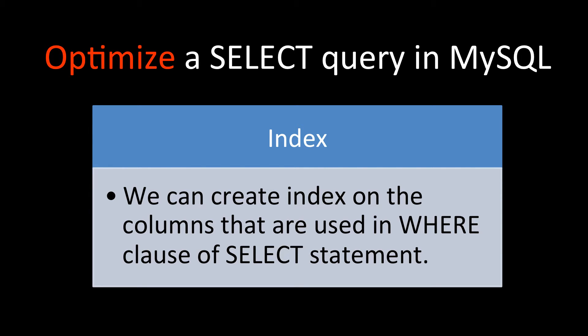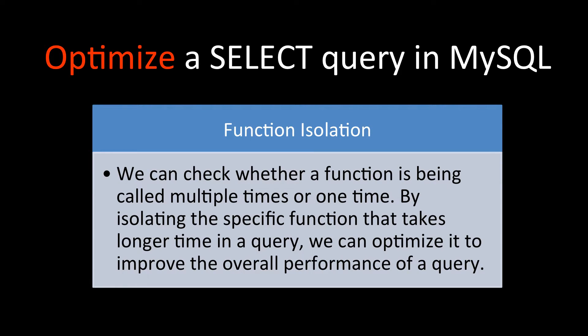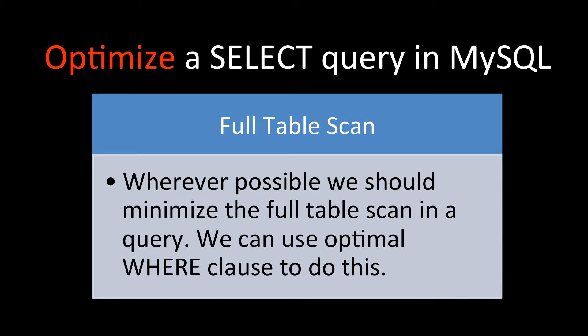Function isolation means we can check whether a function is being called multiple times or just one time. We can isolate the specific function that is taking longer time in a query and then optimize it to improve the overall performance. Because if that function is called multiple times and we improve its performance, the overall query will get much better performance.